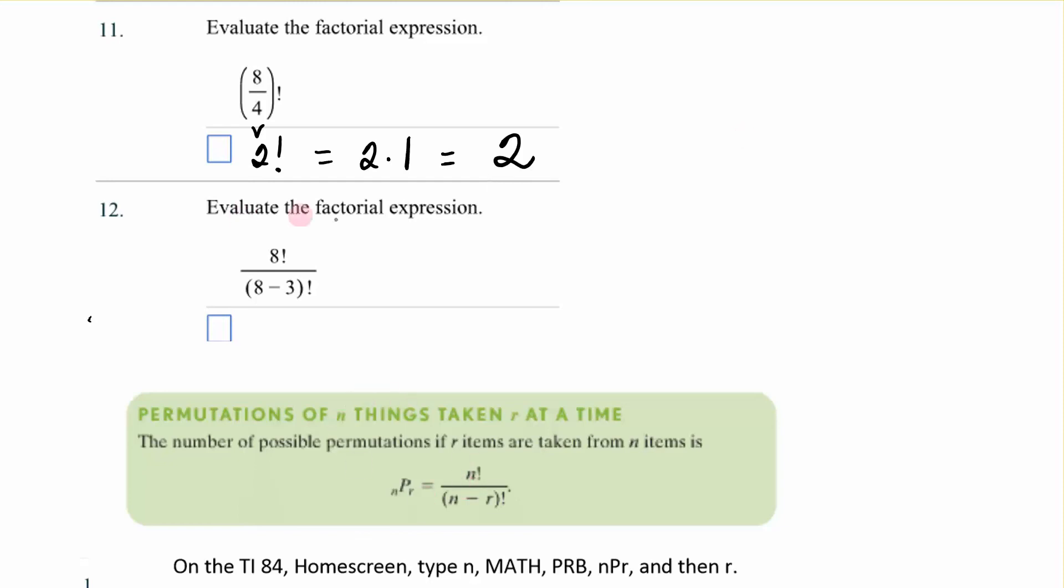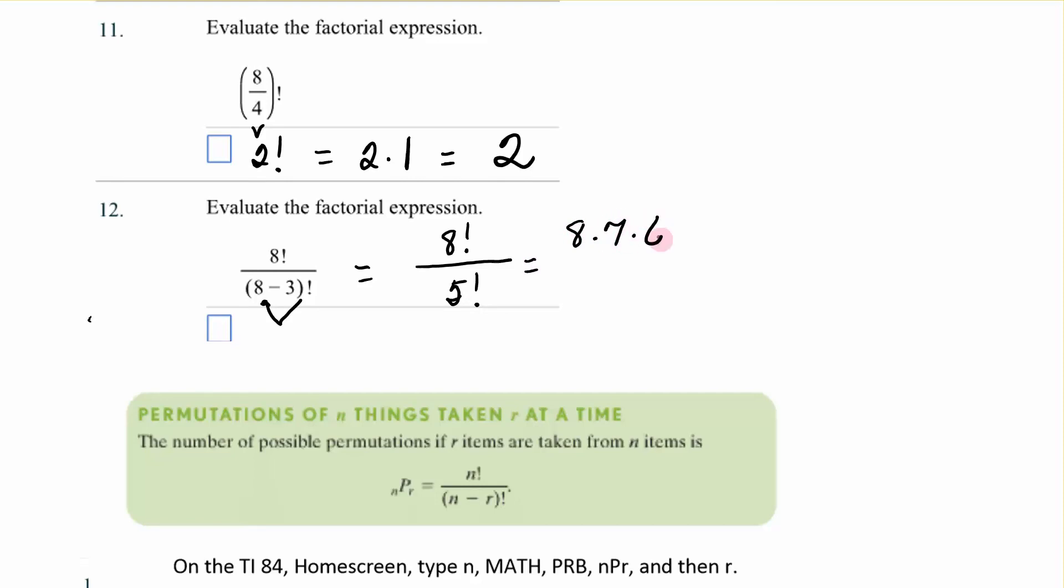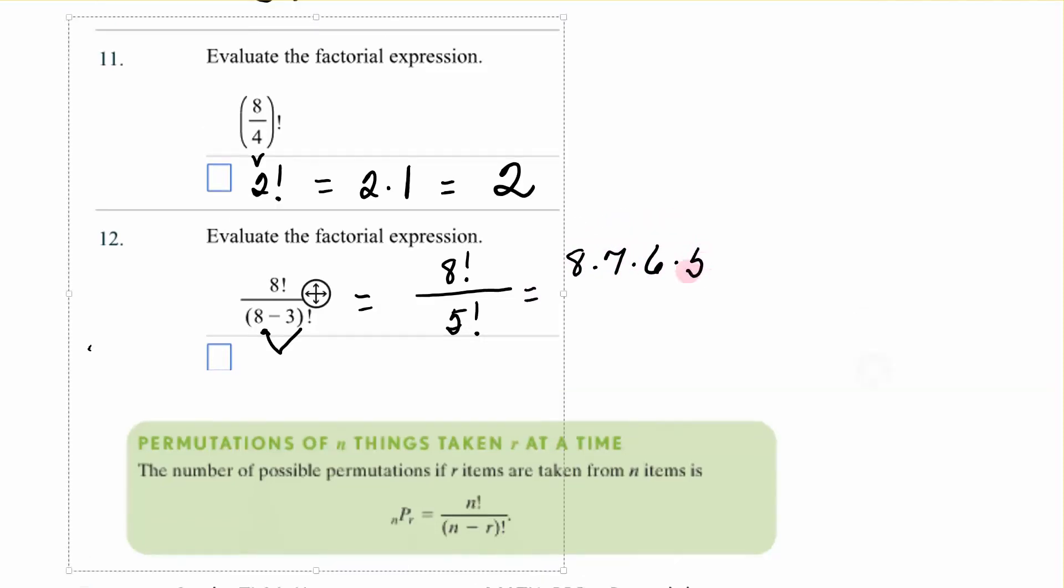All right. We have one more factorial before we start talking about a different way to do permutations. And it is evaluate this factorial expression. Okay. Do what's in the parentheses. That means that is 8 factorial over 8 minus 3 is 5 factorial. If I had to do this by hand, I would say that's 8 times 7 times 6 times 5 factorial over 5 factorial. Those would divide out and I'd have 8 times 7 times 6 and that would give me 336.